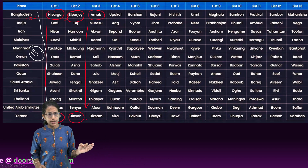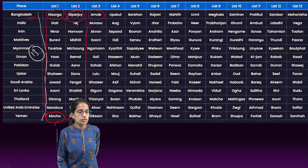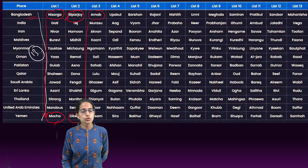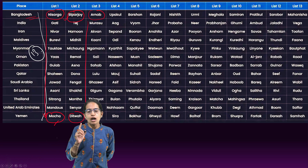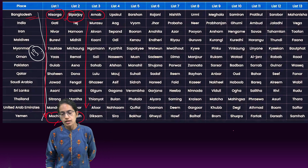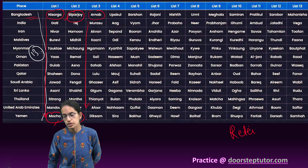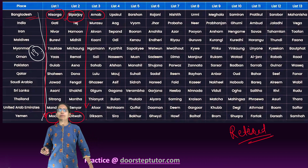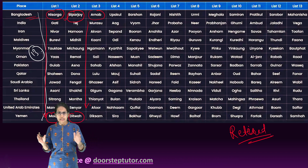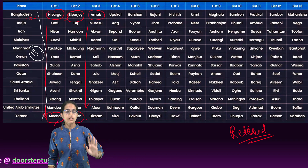Another important thing to understand is that there have been retired names. What does this mean? Retired names means that if any cyclone has been extremely destructive, that name is not considered in the future.